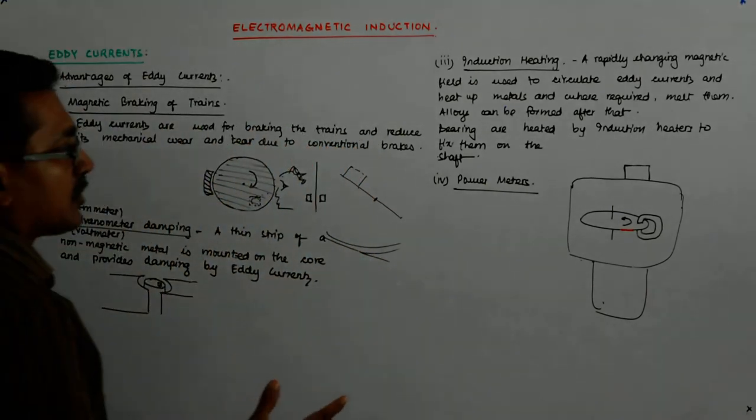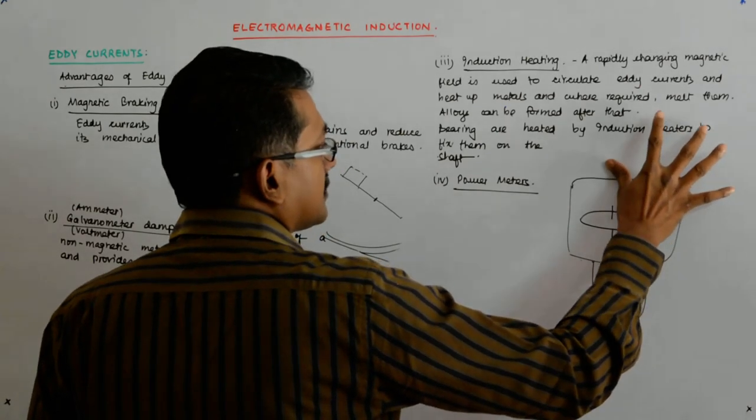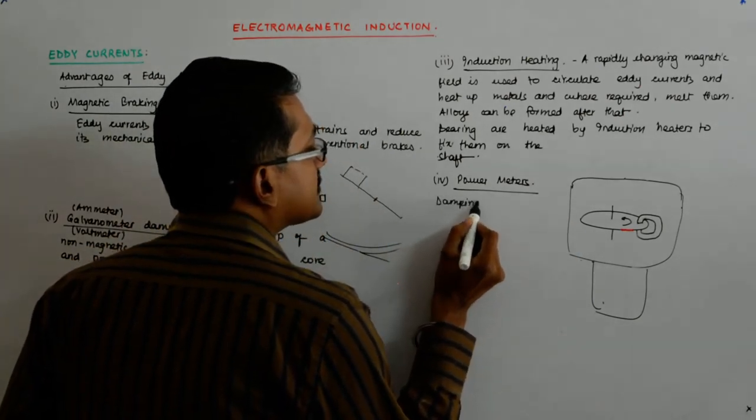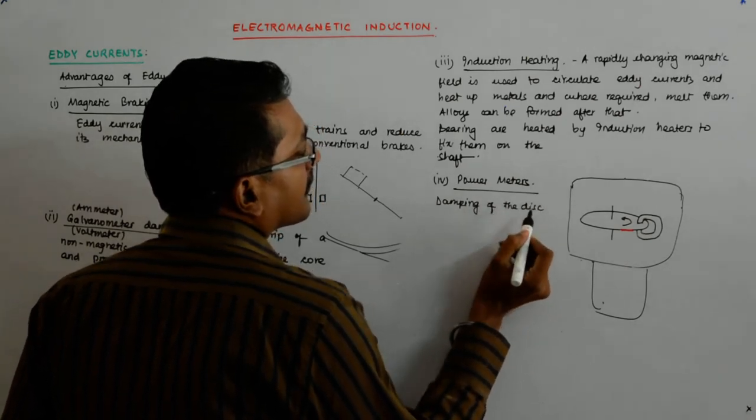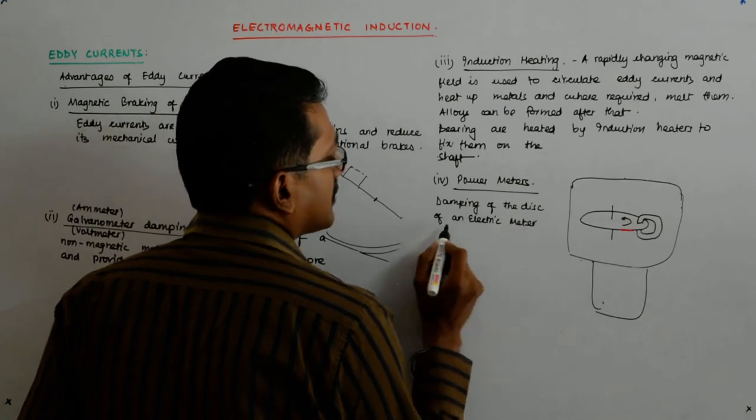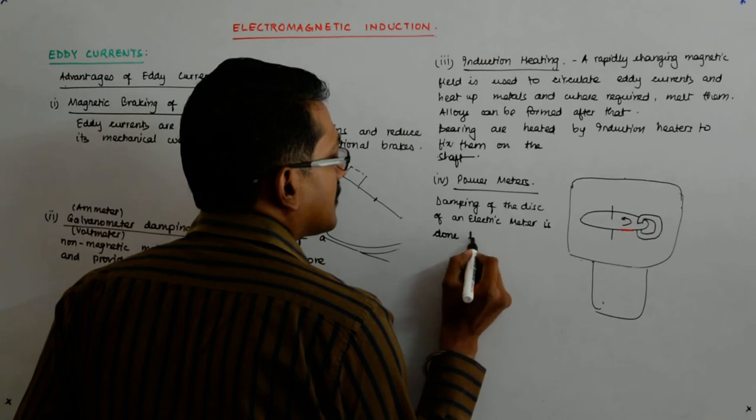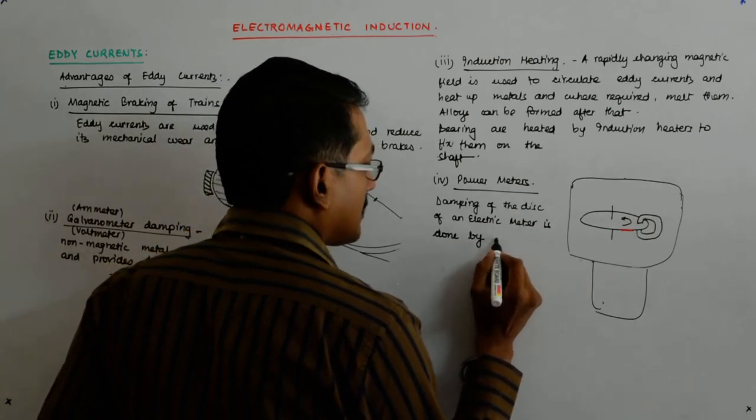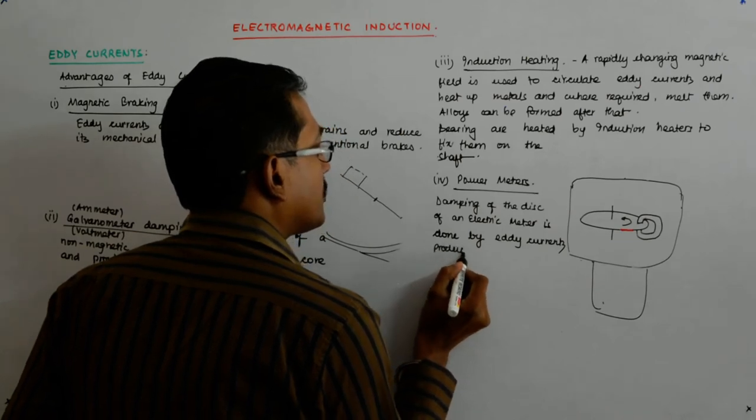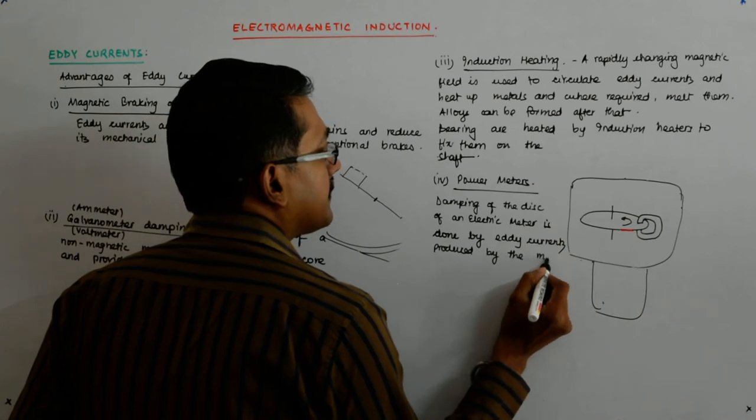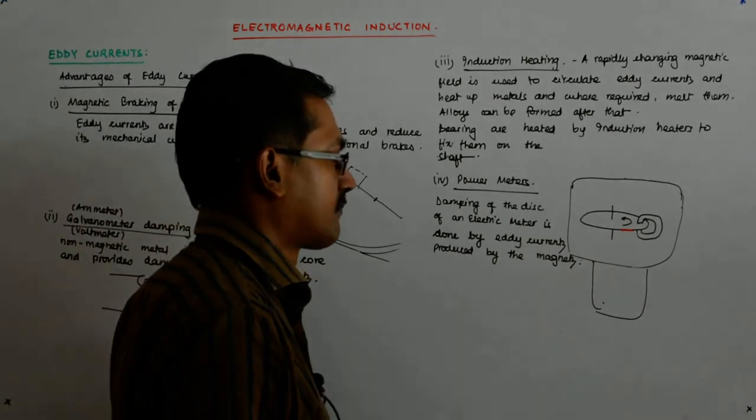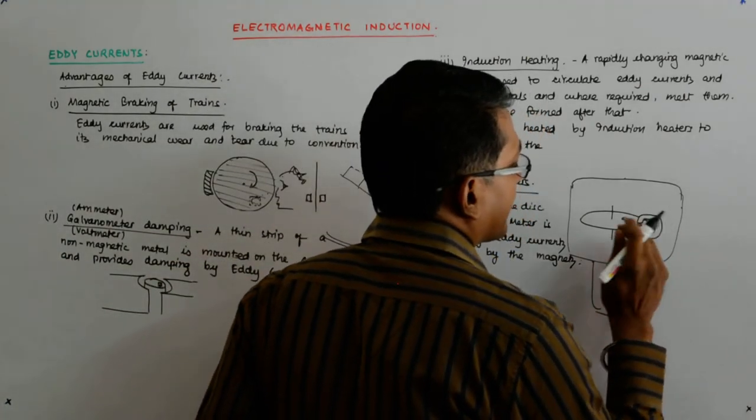That is the reason it is being replaced by electronic meters in the first place. But fine, that was something that was invented by the nation of geniuses that we are. So damping of the disc of an electric meter is done by the magnet, is done by eddy currents produced by the magnets. When you pass through like this, then there will be some eddy current and it will be dampened.